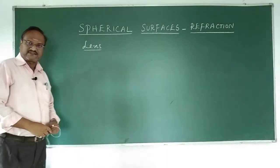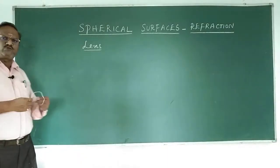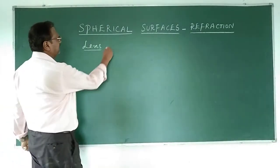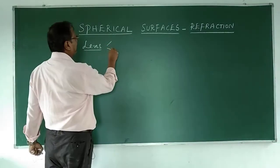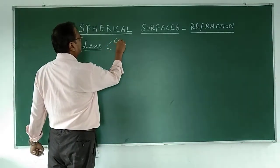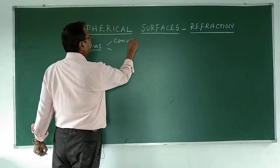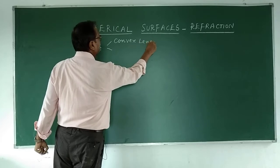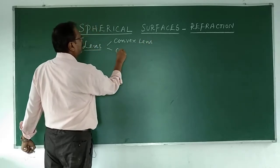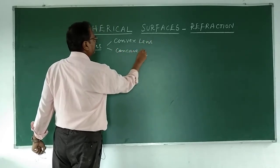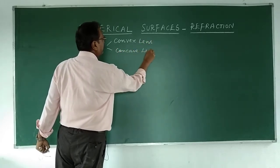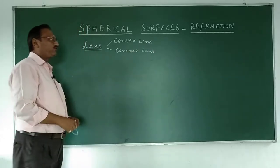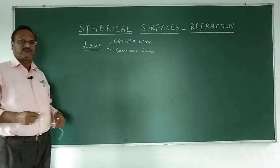The spherical surface we talk about here is a lens. Lenses are of two types: one is a convex lens and another is a concave lens. Let me tell you how to make a lens.